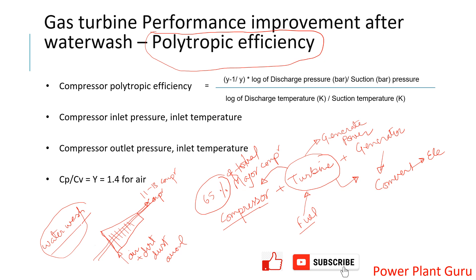To calculate polytropic efficiency, you use this formula: gamma minus one divided by gamma, multiplied by the logarithm of discharge pressure divided by suction pressure, all divided by the logarithm of discharge temperature divided by suction temperature. Discharge pressure is the compressor outlet pressure; suction pressure is the ambient or atmospheric pressure. Discharge temperature is the compressor outlet temperature (CTD), and suction temperature is the ambient temperature. After water wash, you will see a significant improvement in the discharge pressure.